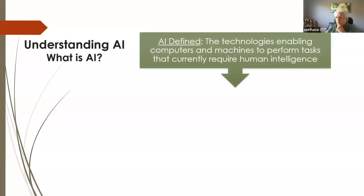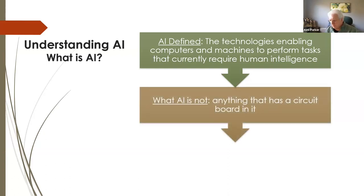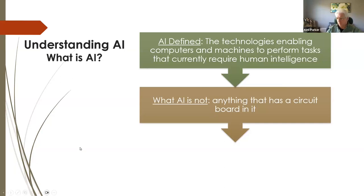So what is AI? It's the technologies — all the things that make it look like it's intelligent. We say artificial intelligence because it's not really intelligent. I'm dismayed when I hear 'oh, it's got AI' — only to find out that it's a marketing term. AI is real, but we have to divorce ourselves from all the things that it is not. It's not something that just has a circuit board or microprocessor in it. Be careful.